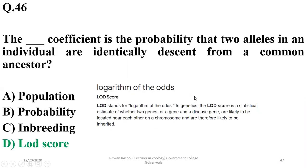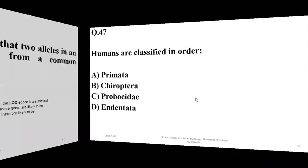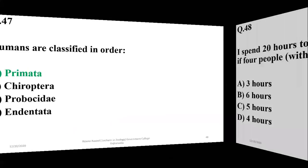The coefficient of relatedness R also represents the coefficient of relatedness. Question 47: Humans are classified in the order Primates — A.